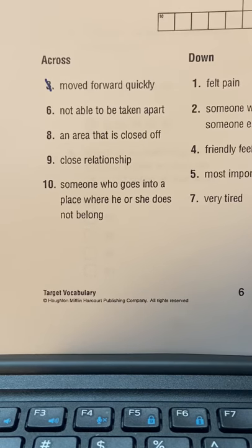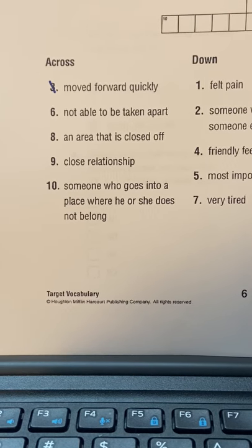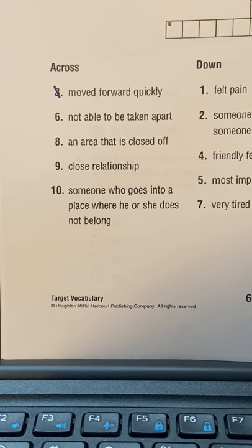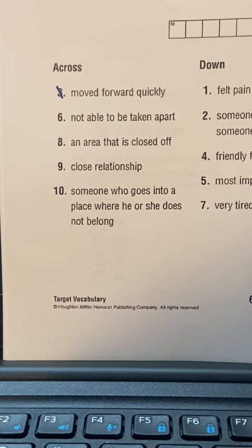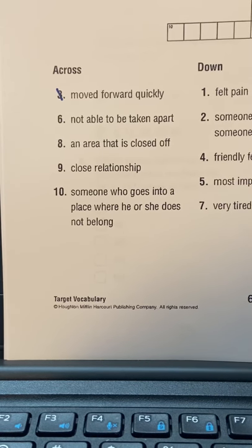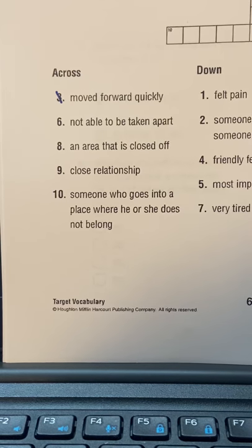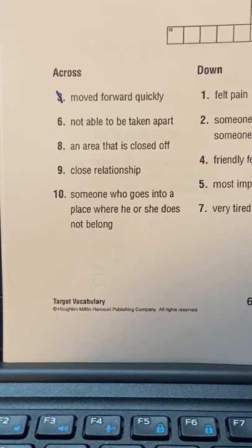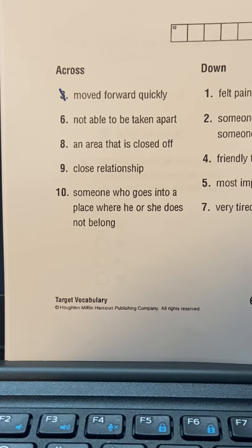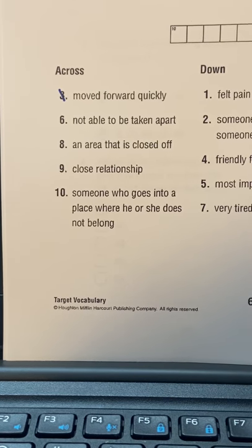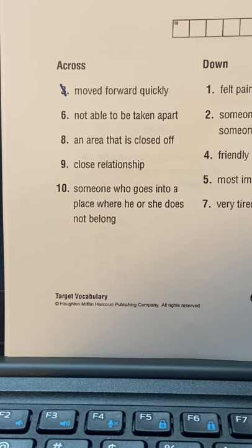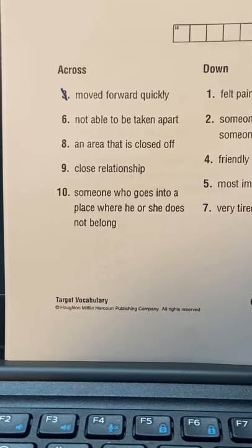All of these words are going across in the crossword right now. Number nine: 'close relationship.' Number ten: 'someone who got into a place where he or she does not belong.'